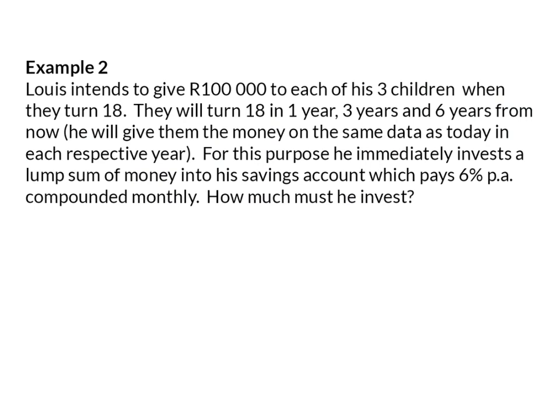Example 2. Louis intends to give 100,000 rand to each of his three children when they turn 18. They will turn 18 in one year, three years, and six years from now, and he will give them the money on the same date as today in each respective year. For this purpose, he immediately invests a lump sum of money into a savings account which pays 6% per annum, compounded monthly. How much must he invest?